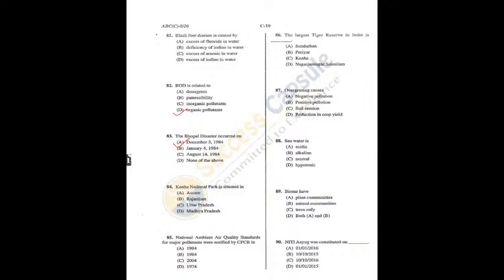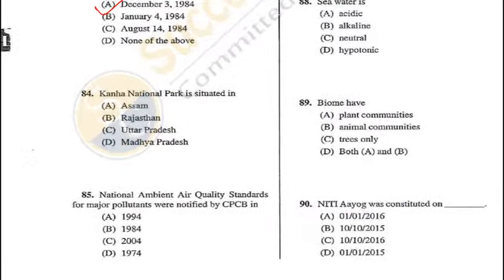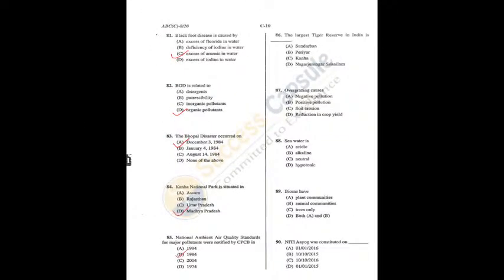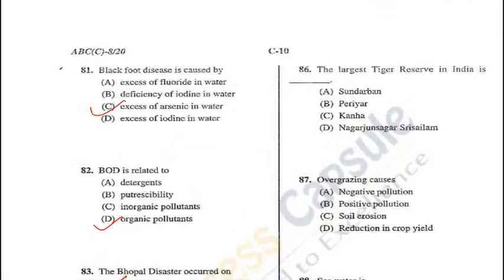Question 83: The Bhopal disaster occurred on the night of 2nd or 3rd December 1984 — A is the correct answer. Q83 = A, Q82 = D, Q81 = C. Question 84: Kanha National Park is in Madhya Pradesh — D is the correct answer. Question 85: National Ambient Air Quality Standards were notified by CPCB in 1984 — B is the correct answer. Question 86: The largest tiger reserve in India is Nagarjunasagar — D is the correct answer.